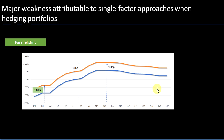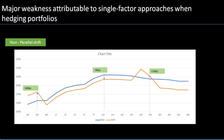One of the biggest weaknesses of a single factor approach is that if you set up a hedge to protect a bond portfolio from adverse movements, you might incur unexpected losses. Your hedge will only be effective if the whole interest rate curve goes through a parallel shift, but in reality it never does. This is where a model using key rates becomes very important.